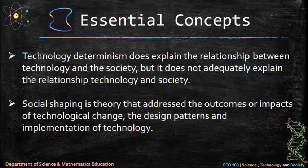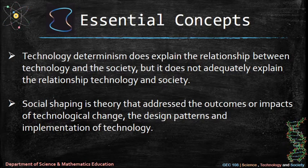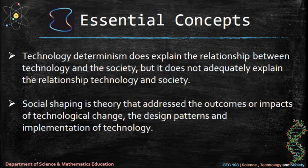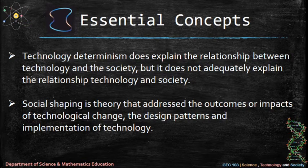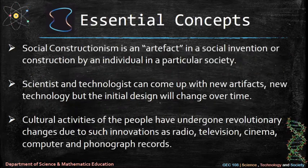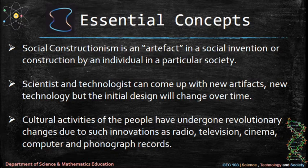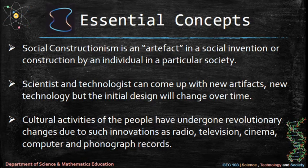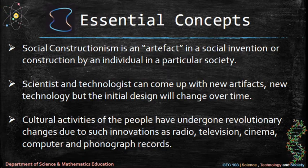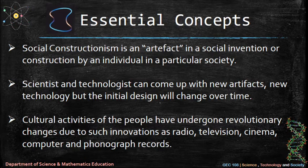Technological determinism does explain the relationship between technology and society but does not adequately explain it fully. Social shaping is a theory that addresses the outcomes, problems, or impacts of technological change, the design patterns and implementation of technology. Social constructionism is an artifact or social invention by an individual in a particular society — scientists and technologists can come up with new artifacts and new technology, but the initial design will change over time. Cultural activities of people have undergone revolutionary changes due to innovations such as radio, television, cinema, computer, and phonograph records.